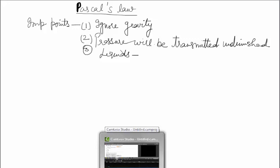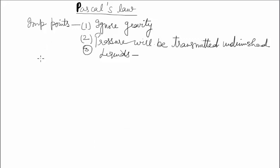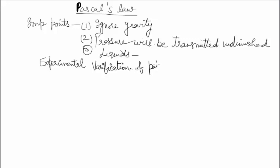Consider a vessel filled with water having three openings. तीनों openings का area of cross section अलग है — जो opening A है, उसका area of cross section small a; जो capital B है, उसका area of cross section small 2a; and similarly for opening C, उसका area of cross section a by 2.